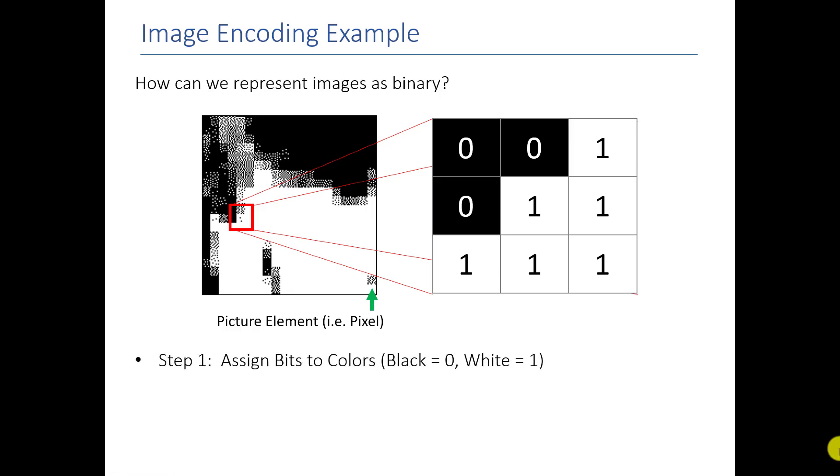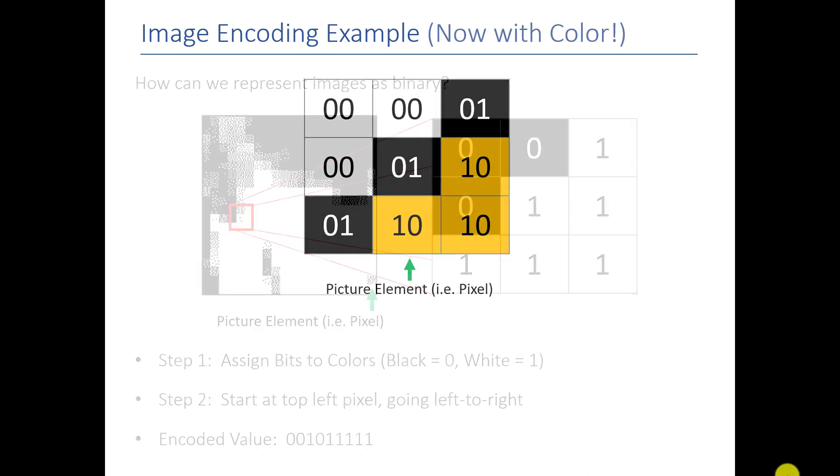And all I do is assign a bit to each of the colors I want to represent. So let's say in this case I just want to do black and white. So black is 0, white is 1. And then all I have to do is, in some arbitrary order, go to each pixel and assign it a binary value that represents the color for that pixel. So here it's 001, 011, 111. And when I'm done, I will have a set of bits here. And these bits I could use to recreate the image, because I will know that the first three correspond to the first row, the next three correspond to the second row, and the last three correspond to the third row.